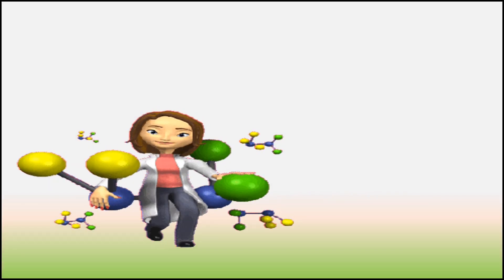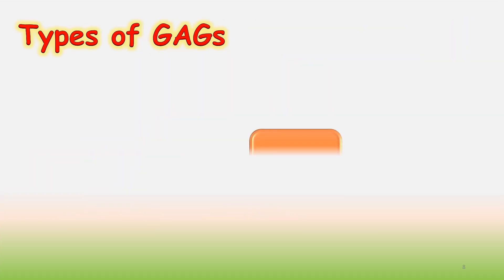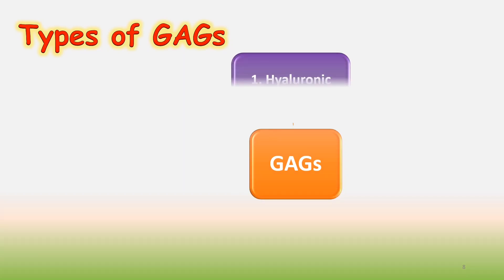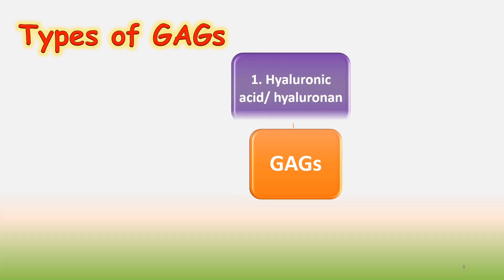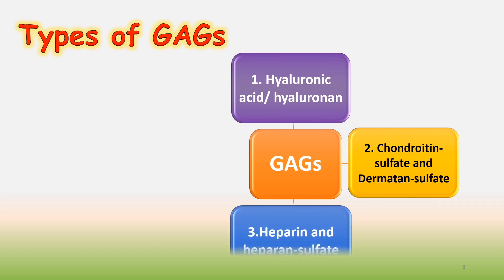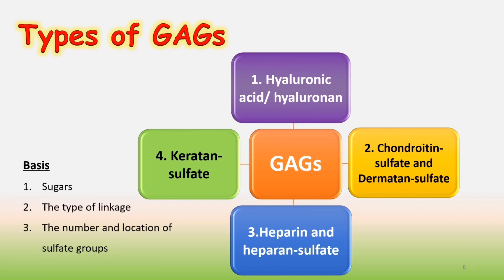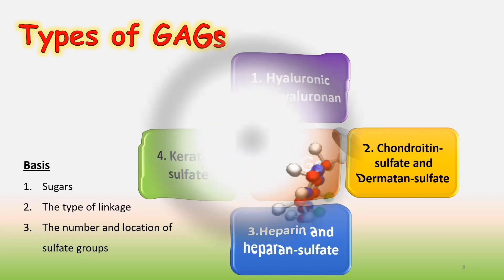Now we will discuss the types of GAGs. Glycosaminoglycans have 4 types: the 1st is hyaluronic acid or hyaluronan; the 2nd is chondroitin sulfate and dermatan sulfate; the 3rd is heparin and heparin sulfate; and the 4th is keratan sulfate. They are divided on the basis of sugars, the type of linkage, and the number and location of sulfate groups.